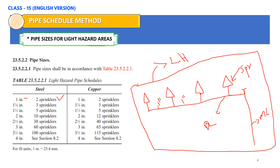So this will be one inch, and this also will be one-inch pipe. Here this will be the third sprinkler, so for three sprinklers, the pipe size shall be one and one-quarter inch. For two sprinklers: one inch; and for the third sprinkler, this pipe shall be one and one-quarter inch, or 32 mm. And up to five sprinklers, we need to consider 40 mm — that is one and a half inch pipe. Here we have only four sprinklers, so for the fourth and fifth sprinkler positions, we need to use 40 mm (one and a half inch) diameter.